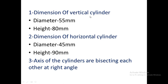Noting down the dimensions: the vertical cylinder has diameter 55 mm and height 80 mm. The horizontal cylinder has diameter 45 mm and height 90 mm. In all problems, first note the dimensions of the vertical solid, then the horizontal solid. It is given that the axes of the cylinders bisect each other at right angles. With these dimensions and this condition, we have to draw the position of the solids along with the curves of intersection.